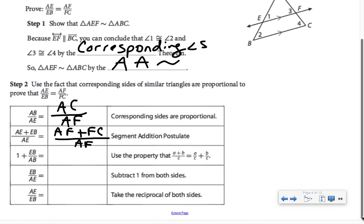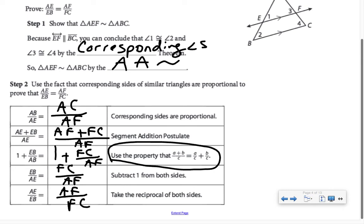I'm using this property to break the numerator up so I have two separate fractions. When I do that, AF over AF is just 1, plus FC over AF. When I subtract 1 from both sides, I've got FC over AF. In the interest of proving exactly what I was setting out to prove, we're taking the reciprocal of both sides to get AF over FC.